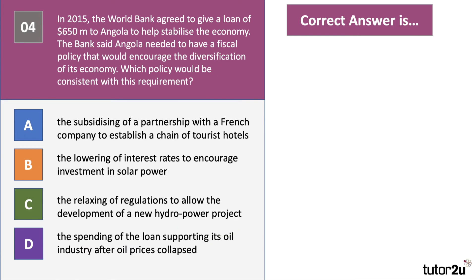Here's our fourth question — a slightly more macro, international feel to this one, but it's all to do with fiscal policy. In 2015 the World Bank agreed to give a loan of $650 million US dollars to Angola to help stabilize their economy. The bank said Angola needed a fiscal policy that would encourage the diversification of its economy. Which policy would be consistent with this requirement as a condition for the loan? Have a go at question four.